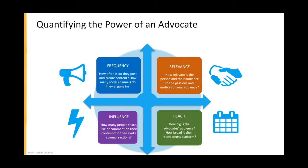The third thing to look at is reach — how many people does the advocate reach? What is their audience and how broad is their reach, and is that reach among the target persona you're looking for? In other words, you want relevant reach, not irrelevant reach. Lastly, look at influence — they may post frequently, but how many people respond to or share their content? Does their posting evoke strong reactions or strong responses?